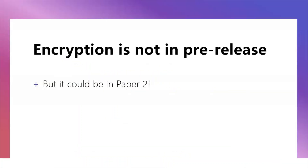Encryption is not in the paper one advanced information, but it could appear in paper two — for example as a programming question. Make sure you do understand encryption methods such as the Vigenère cipher and the Caesar cipher. For help with that, look back at past paper twos — 2020 for example could be quite useful.